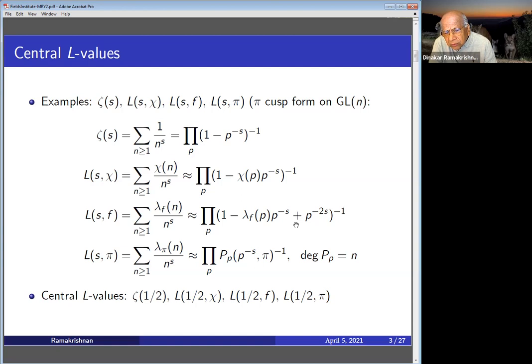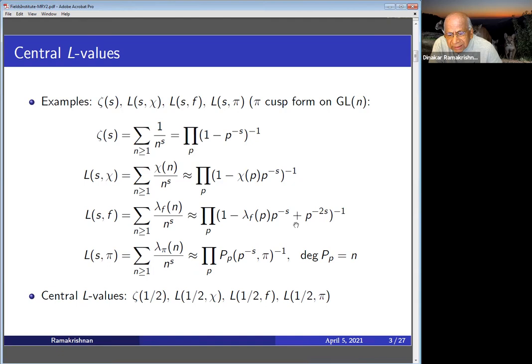For a classical modular form L(s,f), we see that the Euler factors have degree two — that's why we say it's a GL_2 L-series, whereas the earlier ones are GL_1 L-series. In general, if pi is an automorphic form on GL_n, then you have an Euler product where the Euler factors all have degree n. We are interested in the central L-values of these L-series.